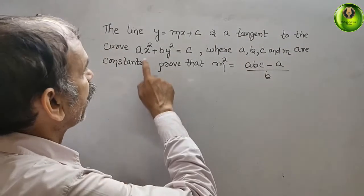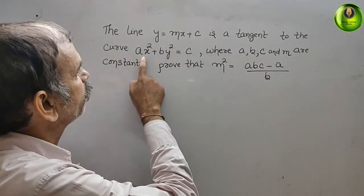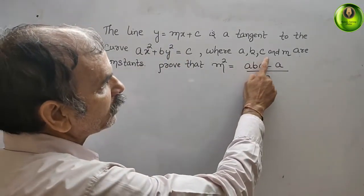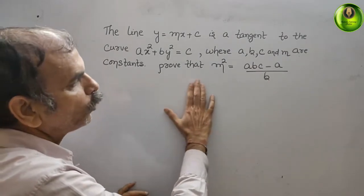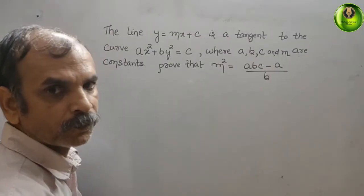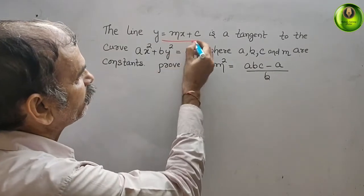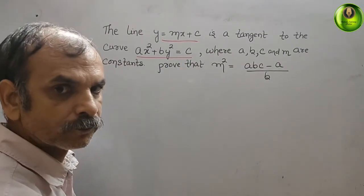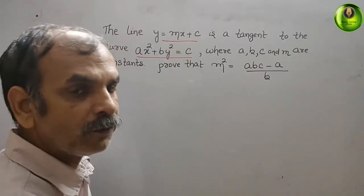The question states: the line y = mx + c is a tangent to the curve ax² + by² = c, where a, b, c and m are constants. Prove that m² = (abc - a)/b. We have the line equation and the curve equation. Now substitute the line equation into the curve.